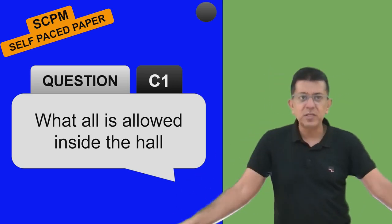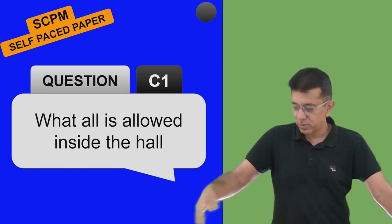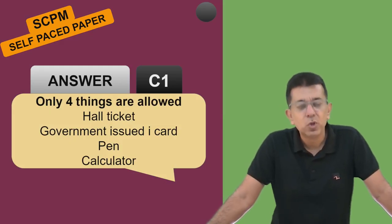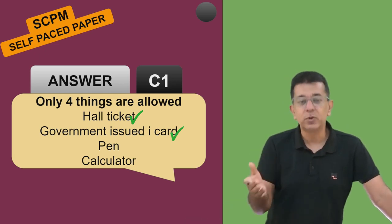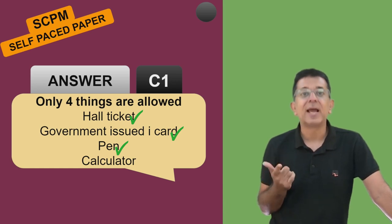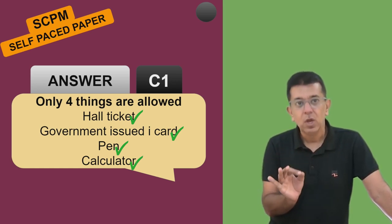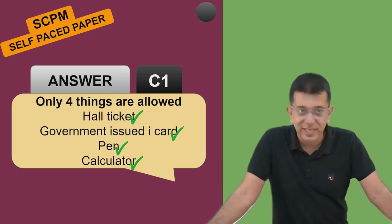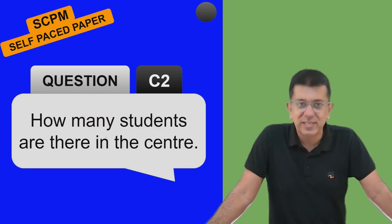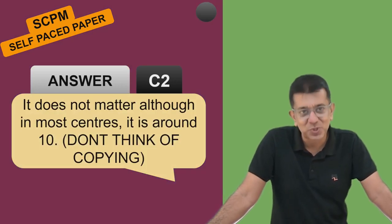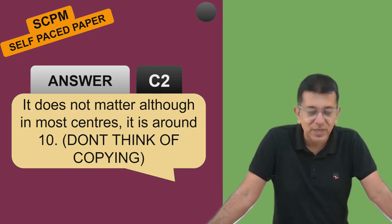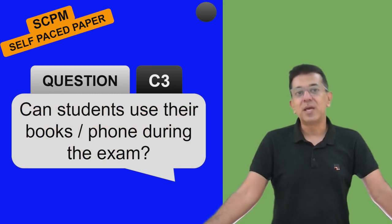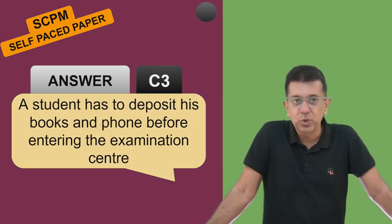What is allowed inside the hall? Four things are allowed: your hall ticket, your government issued ID card, your pen, and a calculator. You are not allowed any notebook - nothing. No textbook, no notebook; you can take your calculator and pencil. How many students are there in the center? One computer is given to one single student. Based on what I've gathered, there are around 10 students in each center. Can the student use books or phone during the exam? Absolutely no - you must deposit books and phone before entering.